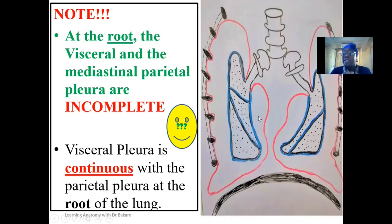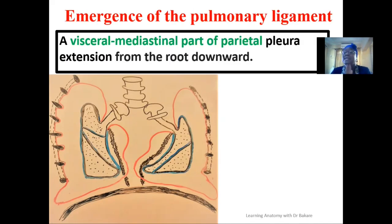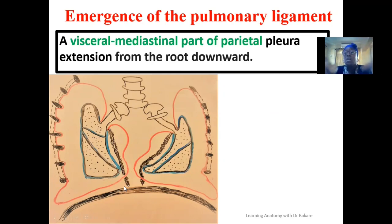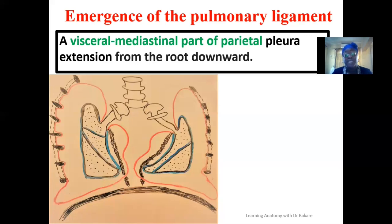At the root of the lungs, a fold of ligament emerges called the pulmonary ligament. This ligament runs downward towards the diaphragm, helping to hold the root of the lungs and running down to attach to the diaphragm, which helps hold the lungs in place and prevents them from folding or being twisted. Because the lungs are soft tissue, this is important for lung function.